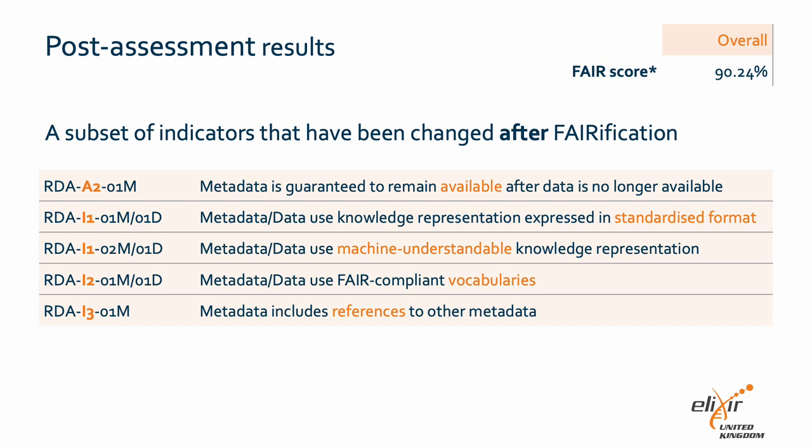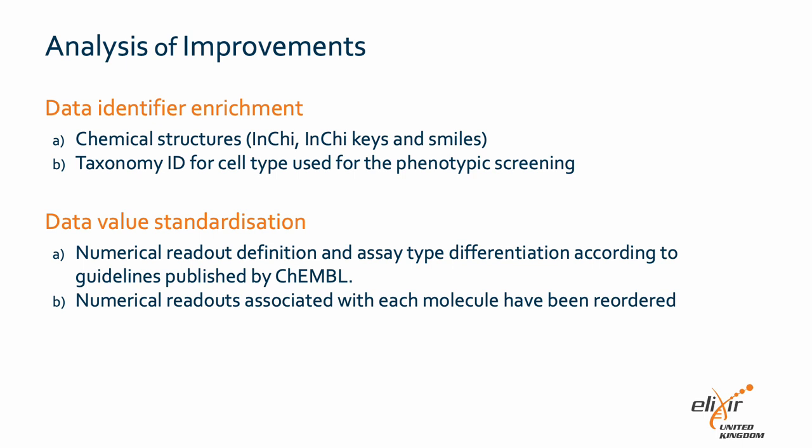The metadata now includes references to other metadata and it is guaranteed to remain available even after the data is no longer available. As part of the verification process, data identifier enrichment was performed. This includes annotating chemical structures using standardized notations like InChIKey and SMILES, and using taxonomy ID for the identification of cell types in phenotypic screening. Additionally, there was a standardization of data values incorporating the definition of numerical readout and distinguishing assay types following ChEMBL guidelines. The numerical readouts associated with each molecule were reorganized to enhance data coherence.